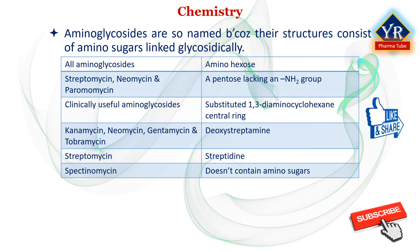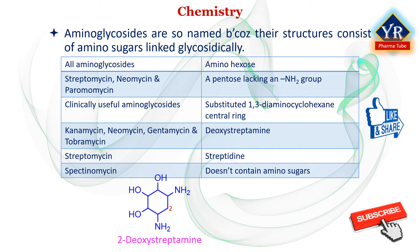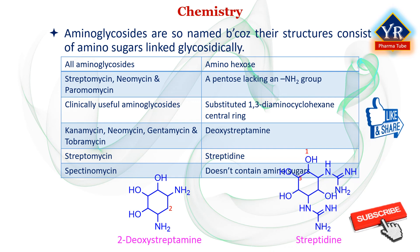In kanamycin, neomycin, gentamicin, and tobramycin, the central ring is deoxystreptamine, and in streptomycin it is streptidine. These compounds are thus aminoglycosidic aminocyclitols, although the simpler term aminoglycoside is used commonly.